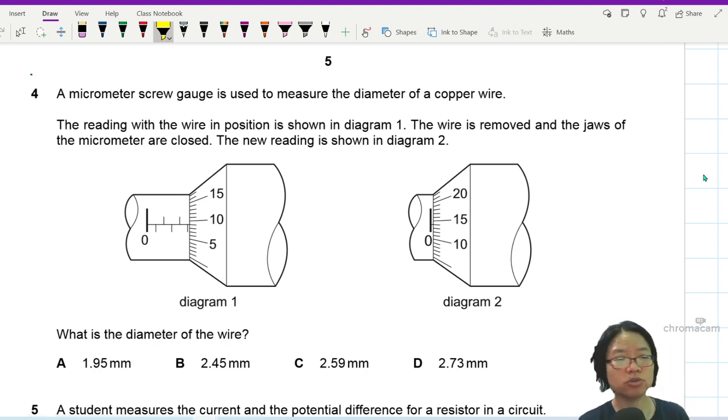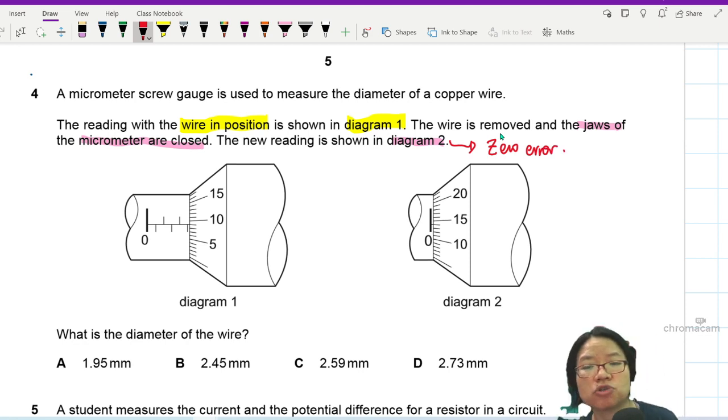Diagram one shows the wire in position. That means you put the wire inside the micrometer and you get this reading. I remove the wire and then the jaws of the micrometer is closed. This is diagram two. So what diagram two shows you is the presence of zero error. Meaning the reading is always bigger than or smaller than the actual value.